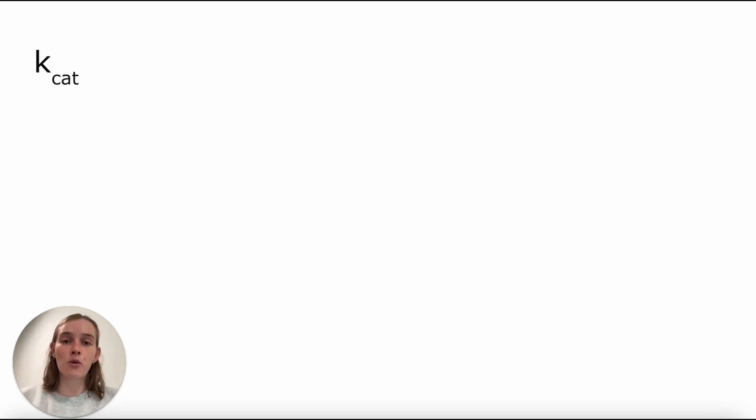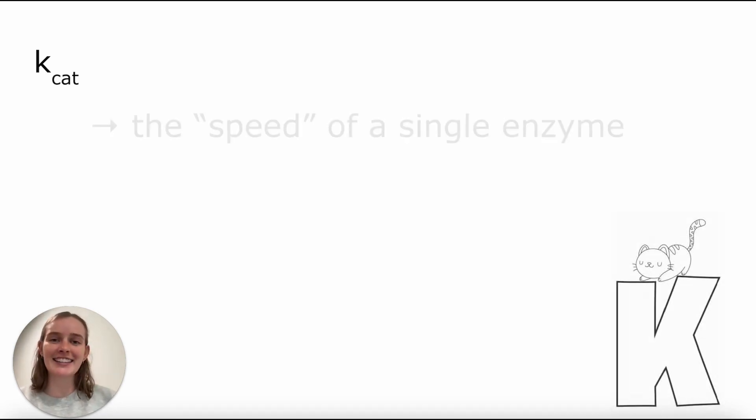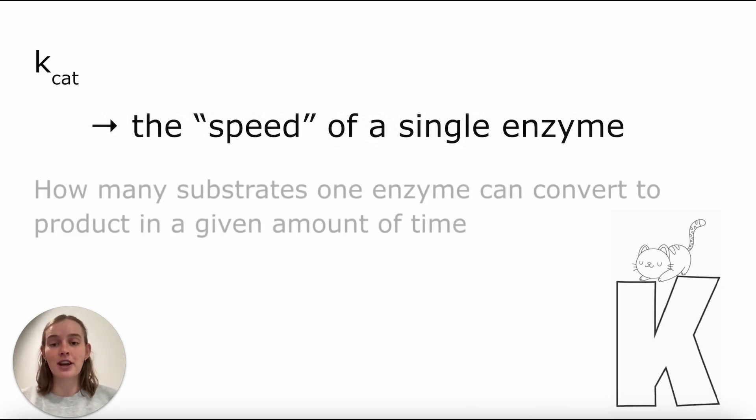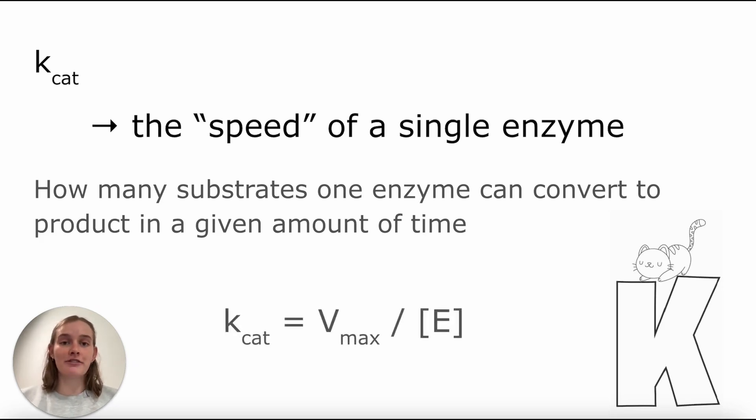Another important factor to understand in terms of Michaelis-Menten kinetics is Kcat. And I'm not talking about that Kcat. I'm instead talking about the speed of a single enzyme. And Kcat can be found by dividing our Vmax by our enzyme concentration. It's essentially how many substrates one enzyme can convert into product in a given amount of time. So that is why we call it a speed.